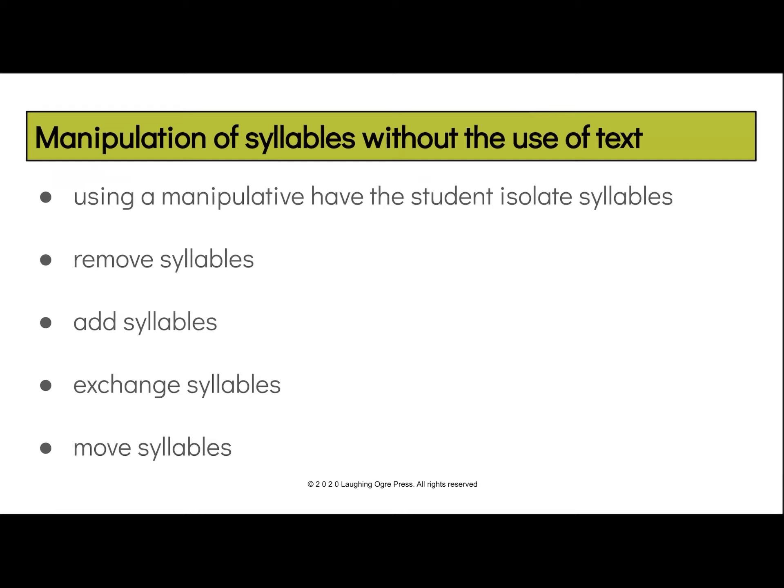Let's add vowel-consonant-e — silent e — to the mix. There are six types of silent e within the VCE syllable type. We start by finding the vowels. In this case, the student will notice a vowel-consonant-e pattern and know that the e at the end won't have a sound. We divide vowel-consonant-vowel, ending up with a closed syllable and a silent e syllable.